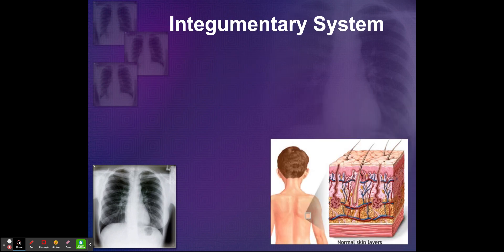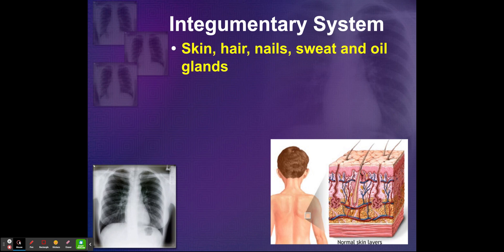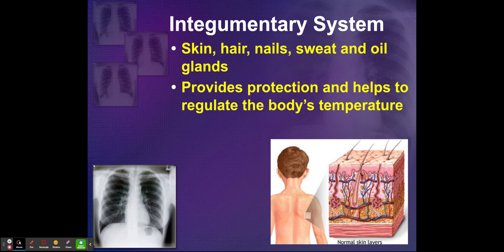You have your integumentary system, which is your skin, hair, nails, sweat, and oil glands. It provides protection and helps to regulate the body's temperature.